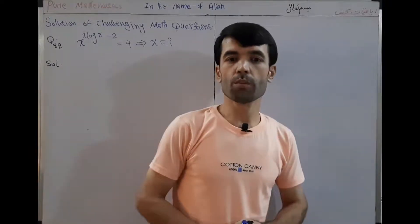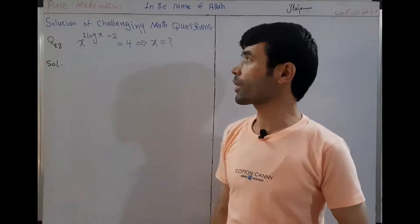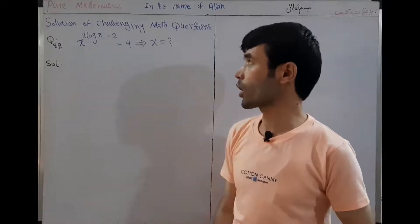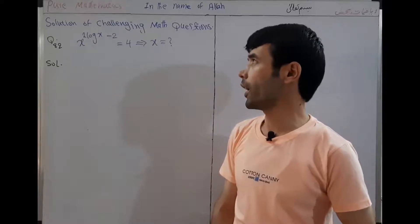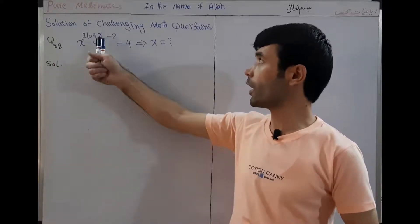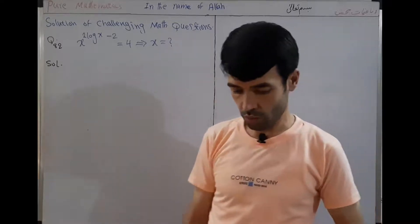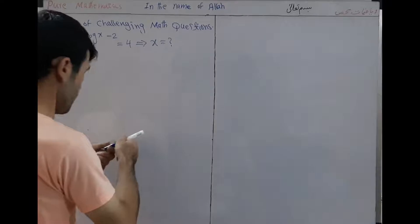Hi everyone, welcome to the Pure Mathematics channel. This is solution of challenging math question, class question 82. We have a question: we want to find the value of x, where x to the power of log x minus 2 is equal to 4.